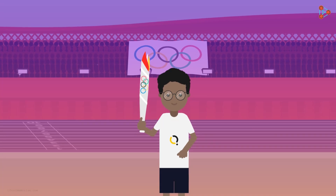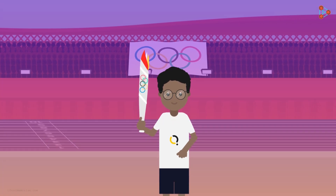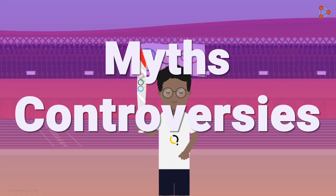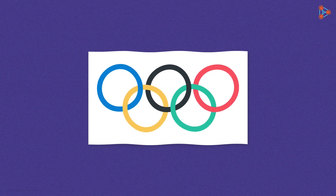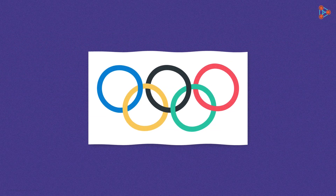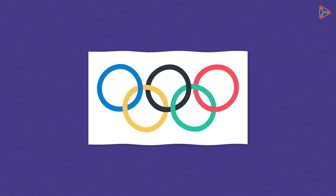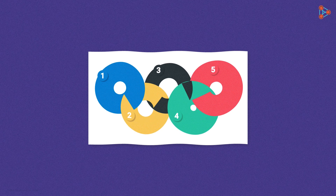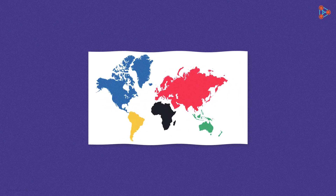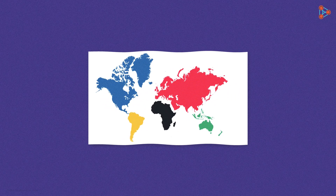As grand as the Olympic Games are, it has its fair share of myths and controversies. One such popular myth revolves around its flag or symbols. We know that the flag comprises five rings of different colours on a white background. This is believed to represent the five participating continents, but that is not entirely true.